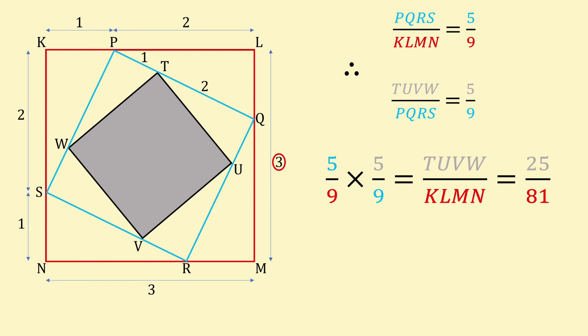Multiplying the two fractions together gives 25 over 81. This is the fraction of KLMN that is shaded. The final answer.